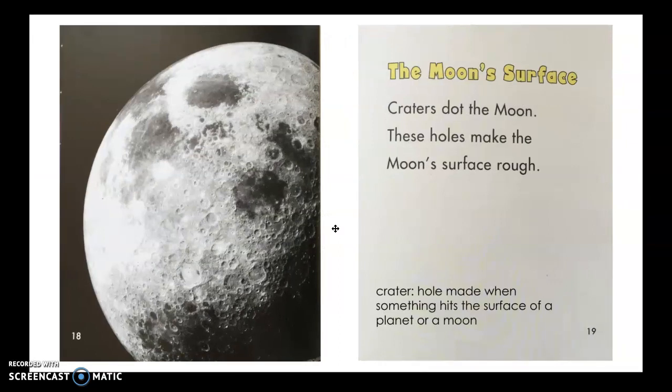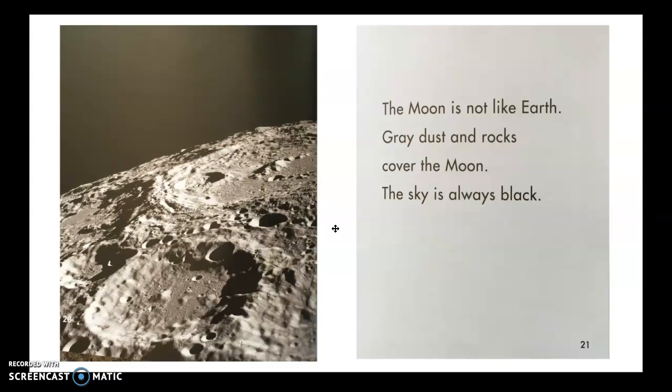The moon's surface. Craters dot the moon. Each holes make the moon's surface rough. A crater is a hole made when something hits the surface of a planet or a moon. The moon is not like earth. Gray dust and rocks cover the moon. The sky is always black.